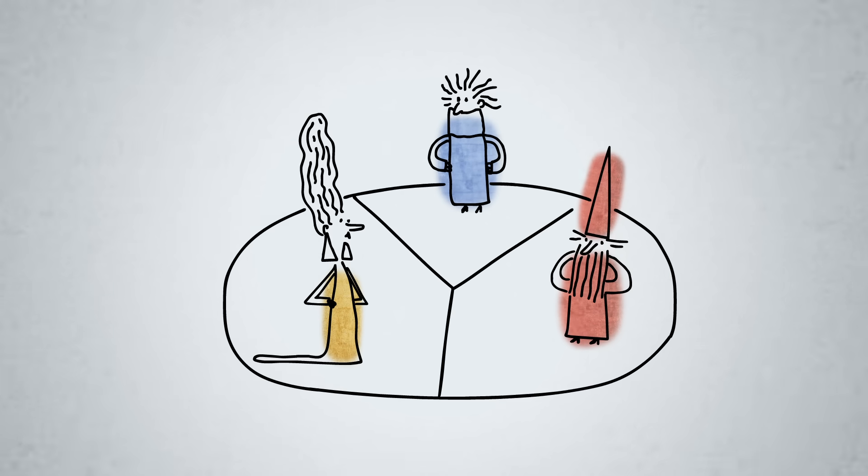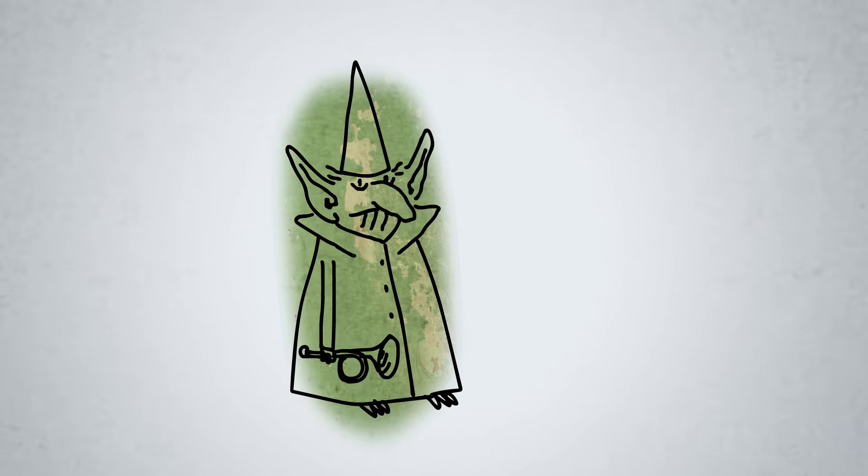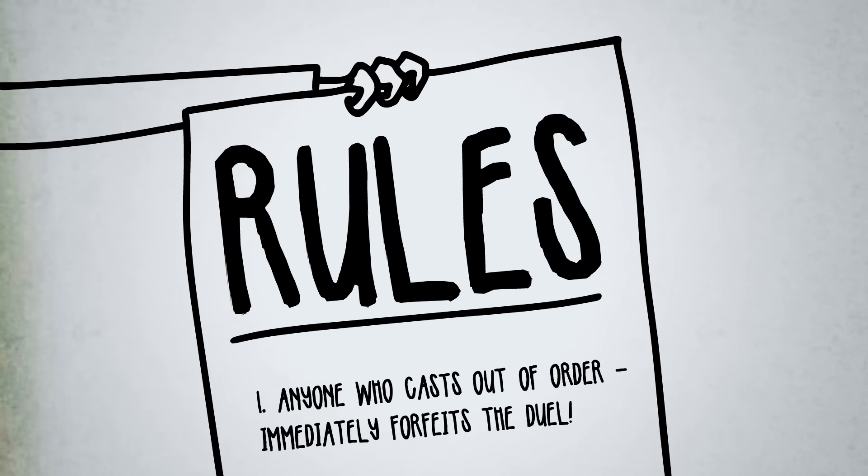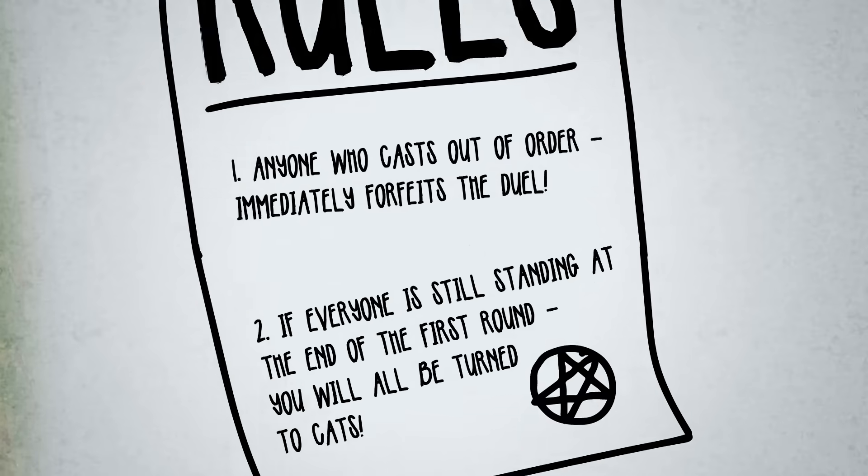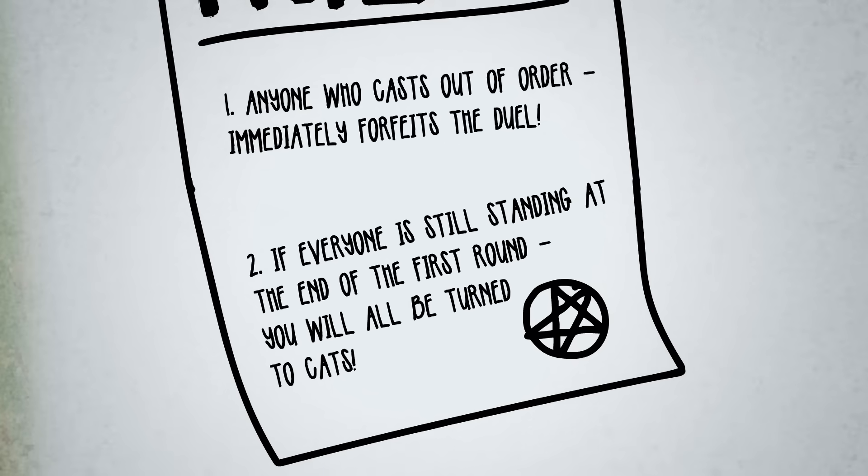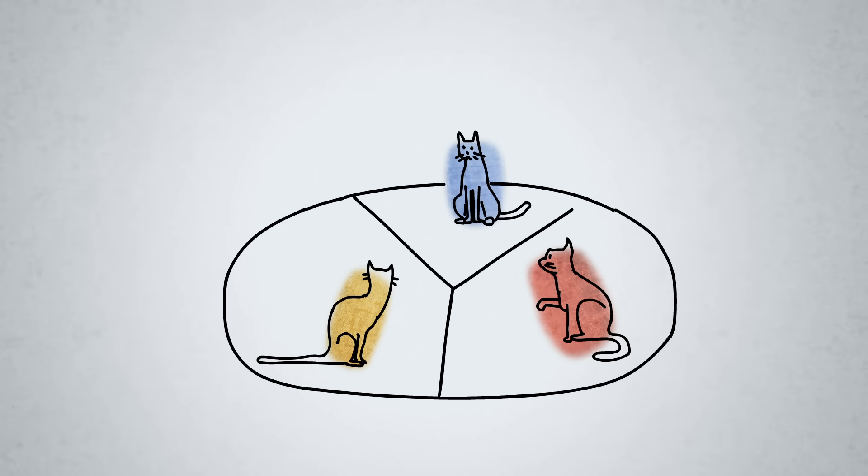Lots are drawn, and you're chosen to cast the first spell in the duel. The Newtnitz magician will go second, and the Leibton enchantress third, after which you'll repeat casting in that order until only one of you is left. The rules of magic duels are strict, and anyone who casts out of order immediately forfeits the duel. Also, to prevent draws, the rules stipulate that if everyone's still standing at the end of the first round, you'll all be turned into cats.